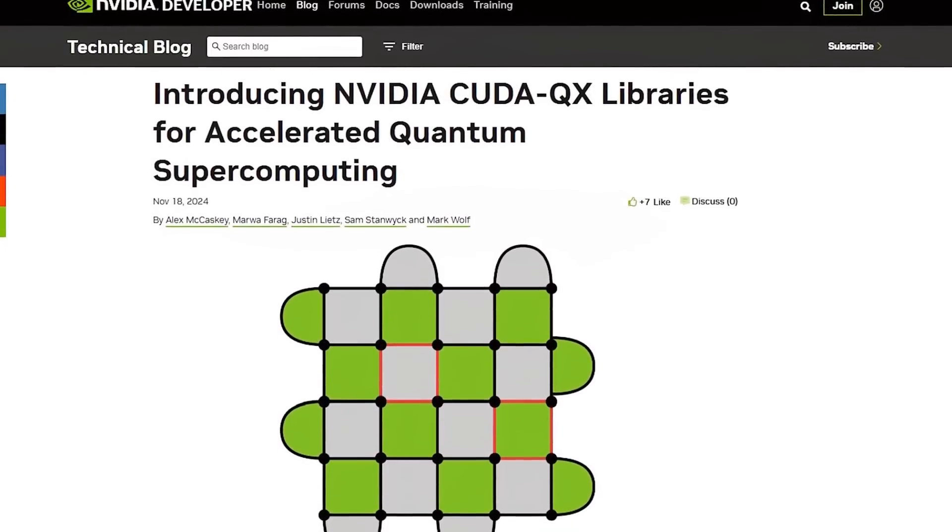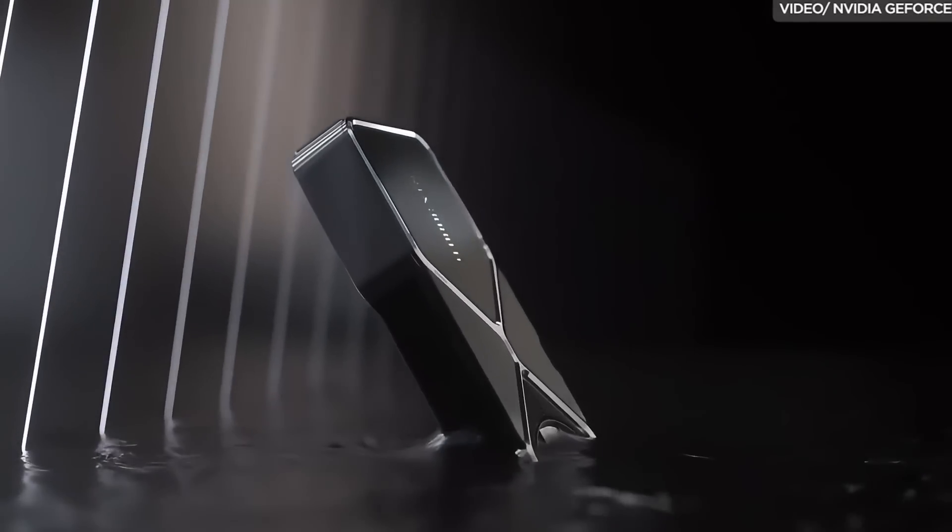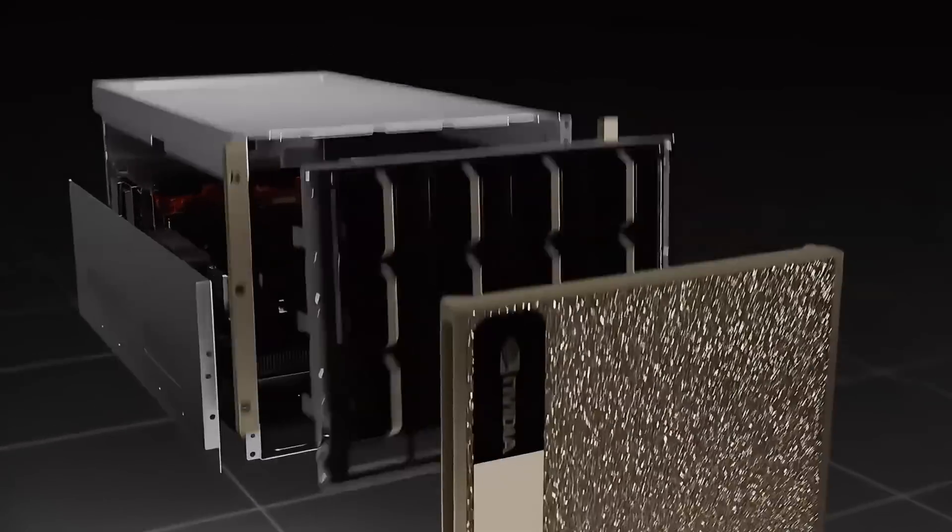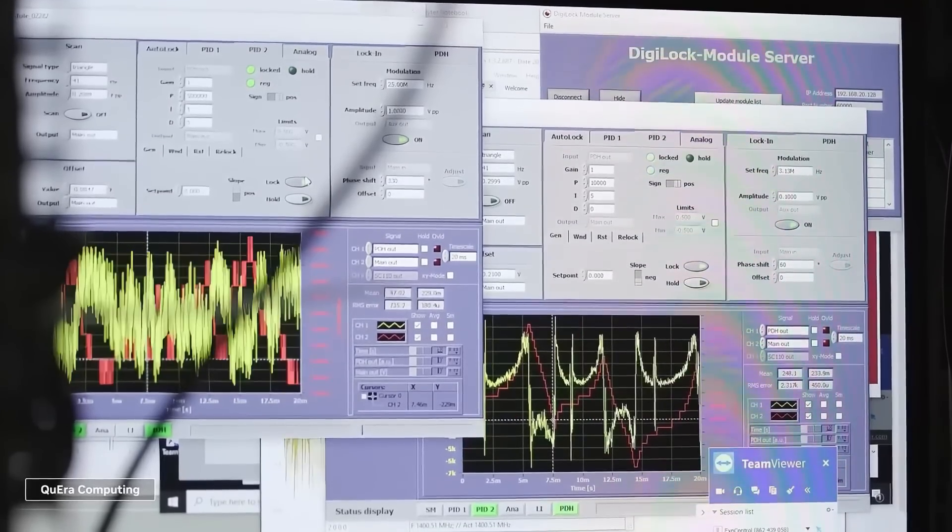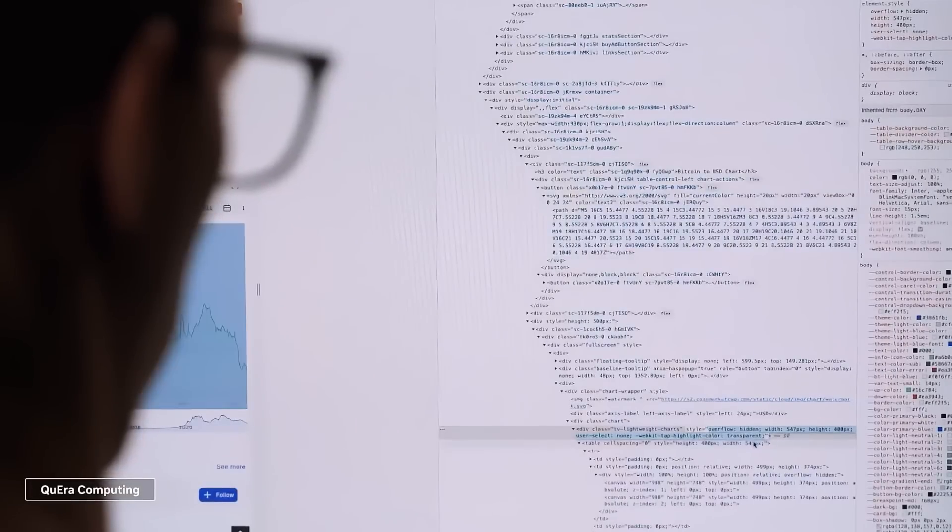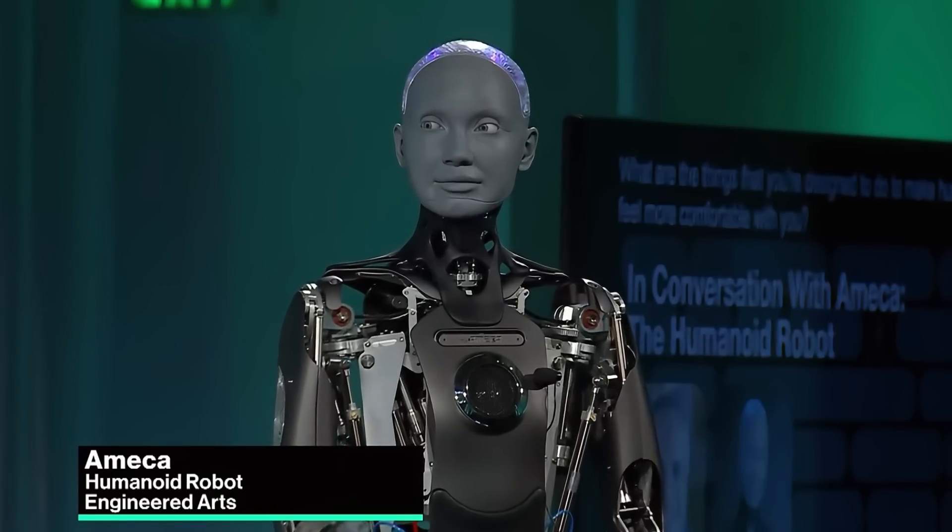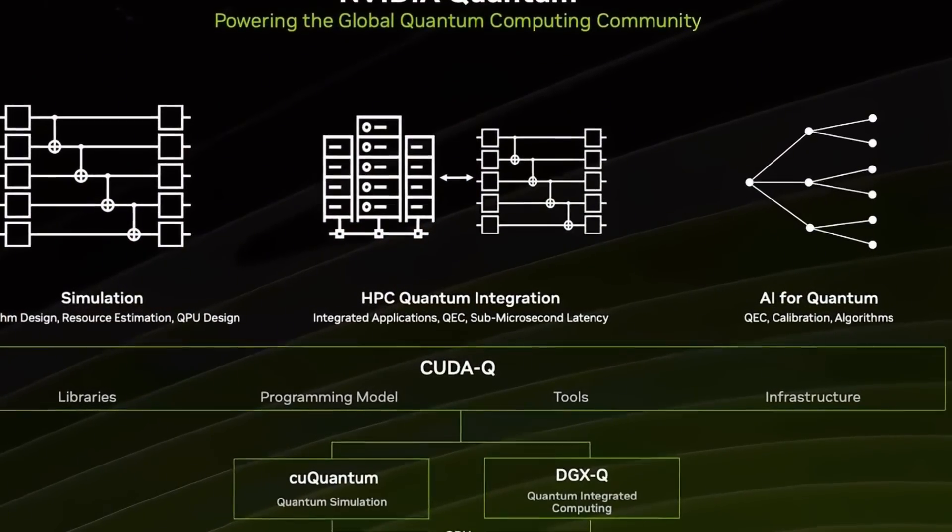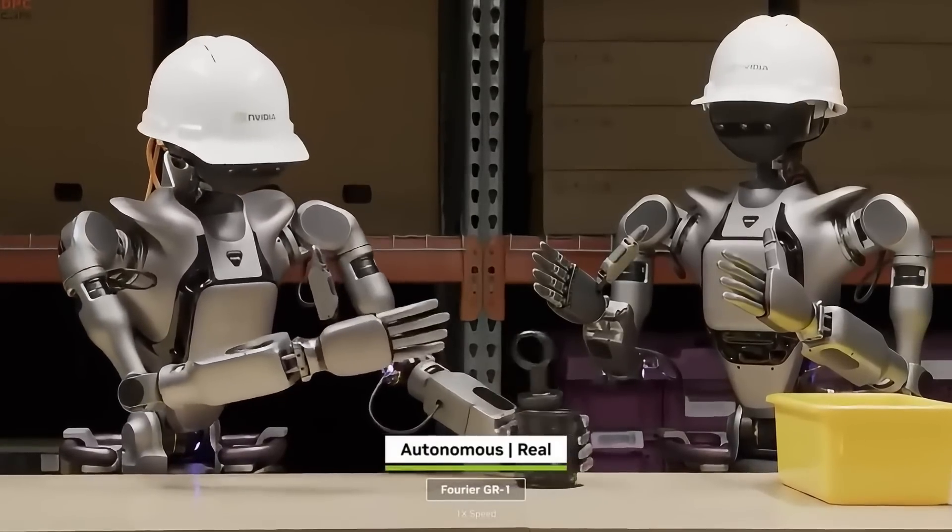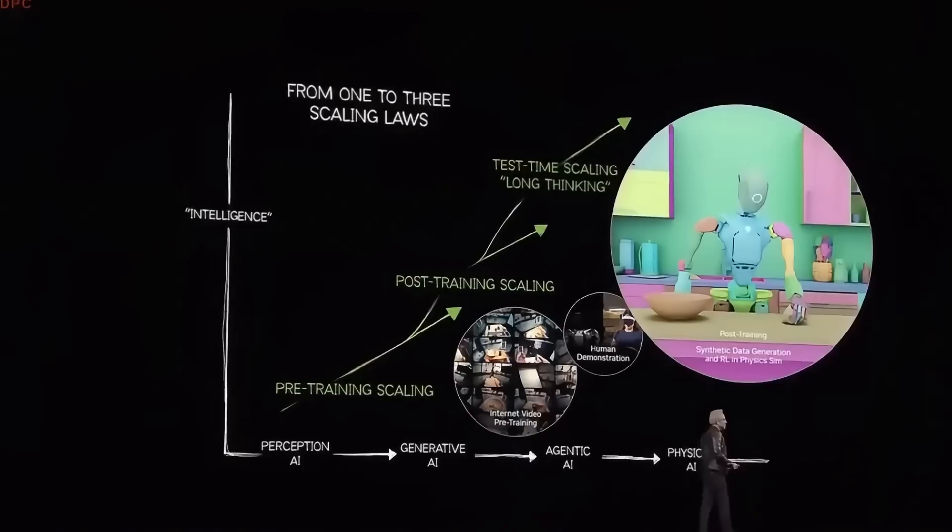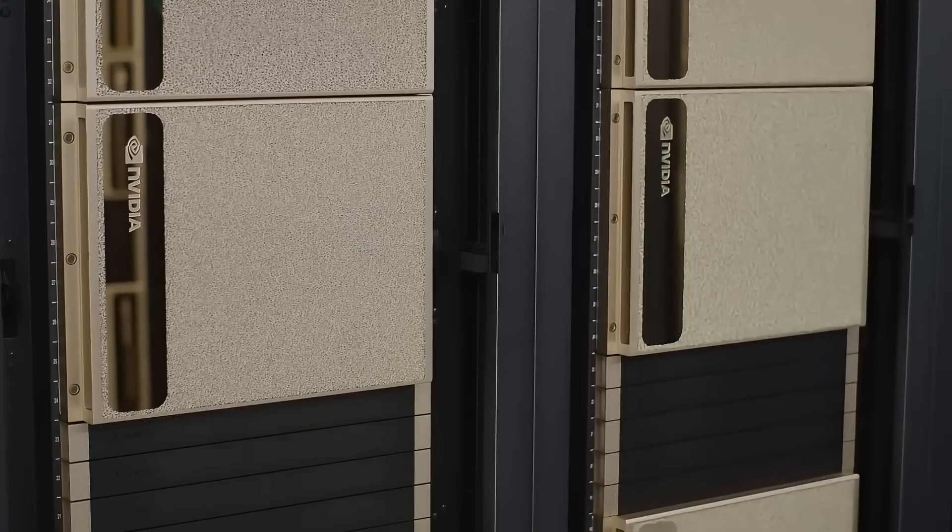Their new CUDAQ platform is designed to integrate quantum computing with GPUs, allowing AI to process data in ways never seen before. And with their EOS supercomputer, they're already testing quantum-enhanced AI training at an unprecedented scale. Experts believe this could be the key to artificial general intelligence, AGI. But if this AI surpasses human intelligence, can we still control it?